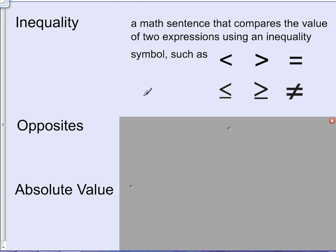For example, if we have an expression that says three something to five, we need to compare three and five. In this case, we know that three would be less than five.